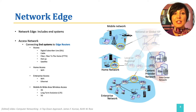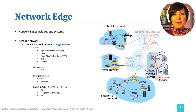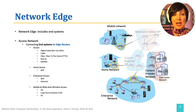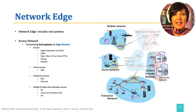Digital subscriber line, cable, fiber to the home, dial-up, and satellite are among the options to provide core access to the edge router. An access network is a network that physically connects an end system to that first router, the edge router.